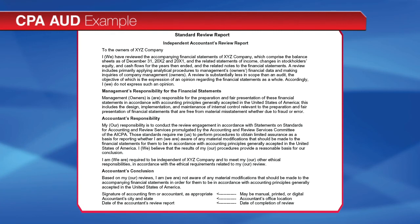A list of the basic elements of a review report is our next topic. We will discuss each element of the report in the order that it's presented. The title is 'Independent Accountant's Review Report.' This title highlights the accountant's independence and clearly identifies the nature of the engagement as a review to distinguish it from other services provided on the financial statements, most notably an audit. The report should be addressed as required by the circumstances of the engagement, for example, to a company's owner.